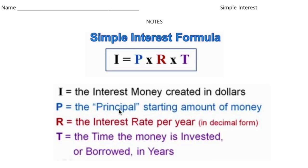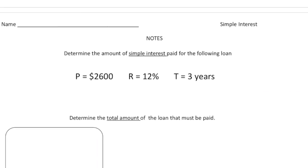The rate is the interest rate per year — that's the amount of the principal you have to pay back per year. This is really important: it has to be in decimal form, so please underline 'decimal form' — that's critical. Finally, T stands for time, the length of the loan. Some loans are two years, some might be six months, and a house loan could be 30 years. The formula I equals P times R times T is how you determine the actual interest of a loan.